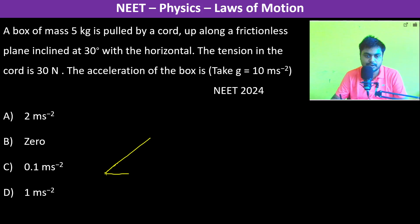So this is the inclined plane at 30 degrees with the horizontal and this is the box which is being pulled. The mass is 5 kg and it's a frictionless plane. The tension in the cord is 30 Newtons.